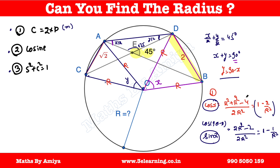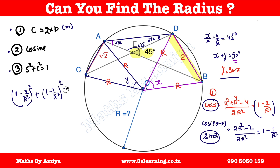Now applying sin²x + cos²x = 1. We have cos x = 1 − 2/r² and sin x = 1 − 1/r². So (1 − 2/r²)² + (1 − 1/r²)² = 1. Solving this equation gives r = ±1 and r = ±√5. The negative sign is not possible, so we consider +1 and +√5.